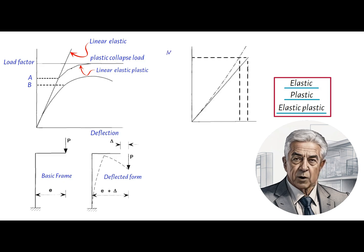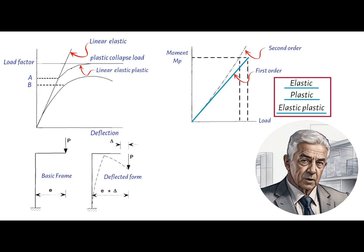Additionally, we also have first-order and second-order structural analysis. In first-order analysis, the structure's stiffness is assumed to remain constant and unaltered by changes in geometry when loaded. This approach is commonly used for most orthodox steel structures.